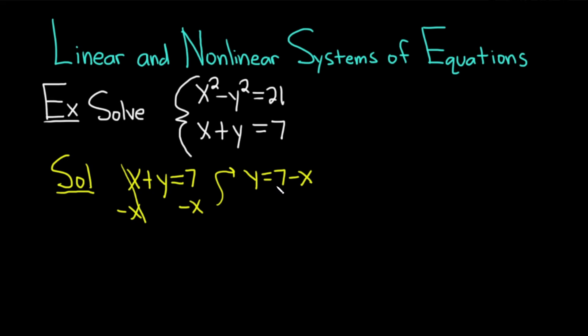Now that we've solved for y, what we can do with this is we can plug it into the first equation. So when we do that, we're going to get x squared minus, and instead of y squared, it's going to be 7 minus x squared. So parentheses 7 minus x squared equals 21. We solved the second equation for y and then we plug that into the first.